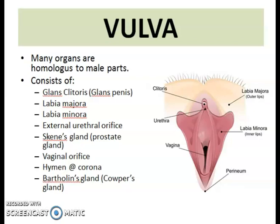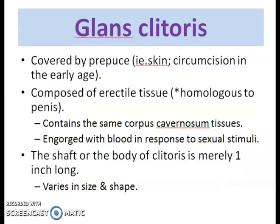The vulva is the entire collective external genitalia for the female. Many organs are homologous to male parts: the glans clitoris is homologous to the glans penis; labia majora and labia minora; the Skene's glands are homologous to the prostate gland; the vaginal orifice; the hymen (or corona, or 'selaput darah'); and the Bartholin's gland is homologous to the Cowper's gland in males.